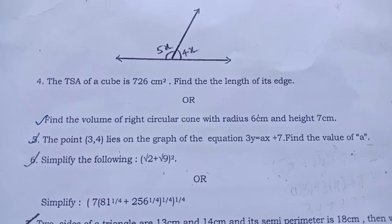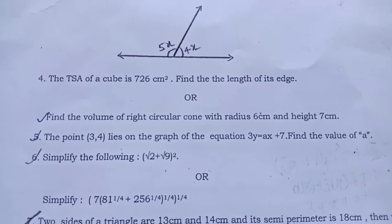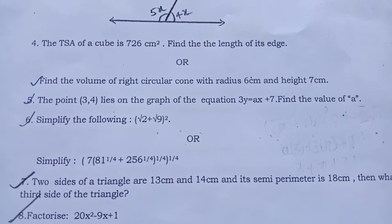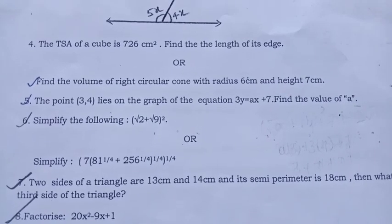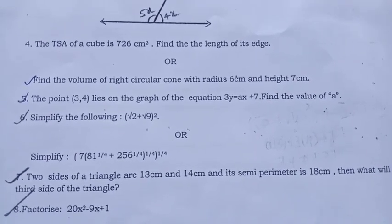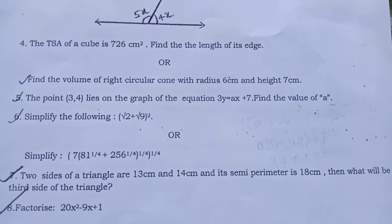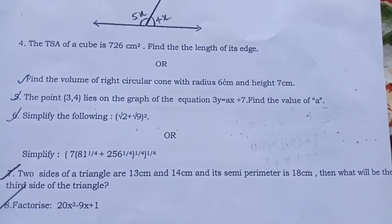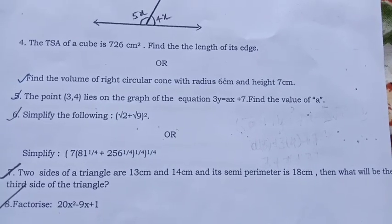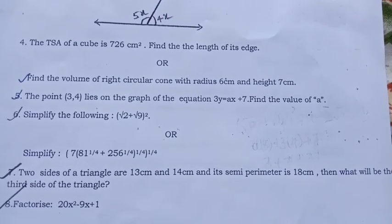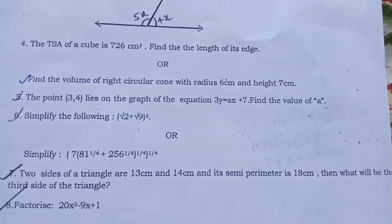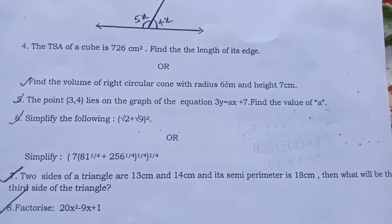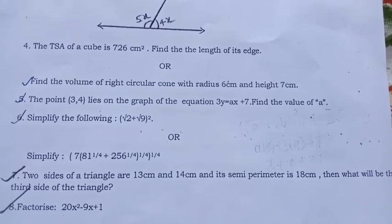1 fourth plus 256 raised to 1 fourth bracket raised to 1 fourth. Two sides of a triangle are 13 cm and 14 cm and its semi-perimeter is 18 cm. Then what will be the third side of the triangle. You have to find the third side. They have given two sides of a triangle and its semi-perimeter. Kindly note, it is semi-perimeter.